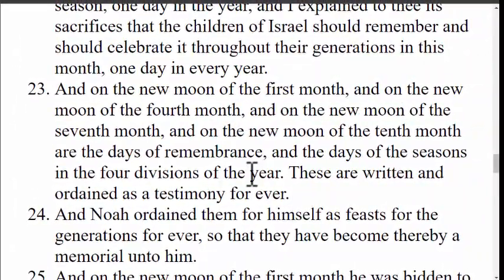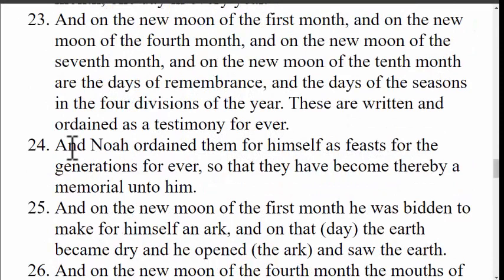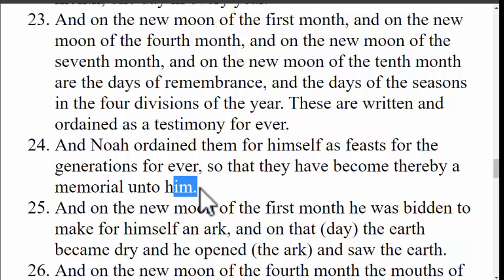Verse 23 says, 'These are written and ordained as a testimony forever.' When it says they're written, it's talking about the holy tablets, meaning they're never going to go away — like the Messiah says, the earth will be burnt up first before the Days of Remembrance go away. Verse 24 says, 'And Noah ordained them for himself as a feast for the generations forever, so that they have become thereby a memorial unto him.' So here you have Noah, who, wanting to remember these days, changed them into a feast day for himself.